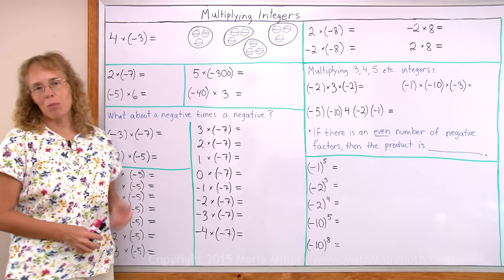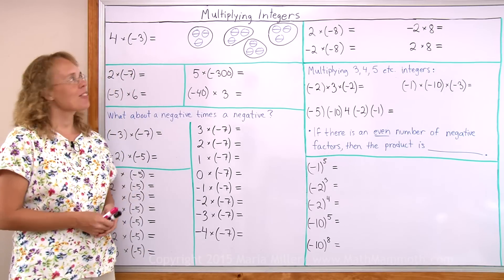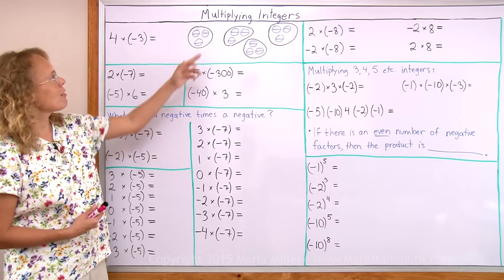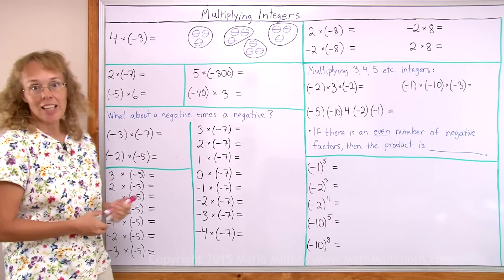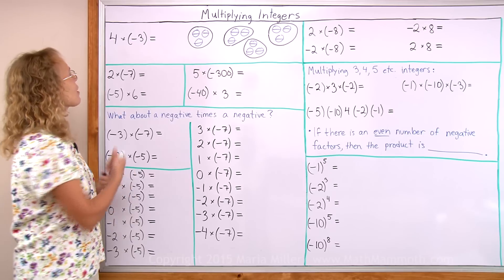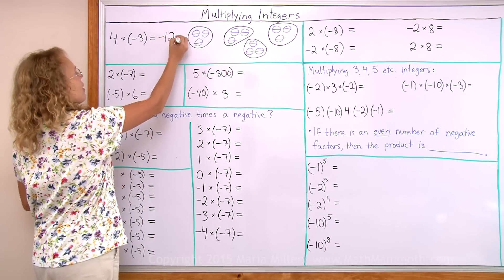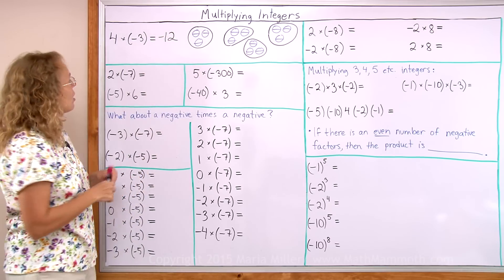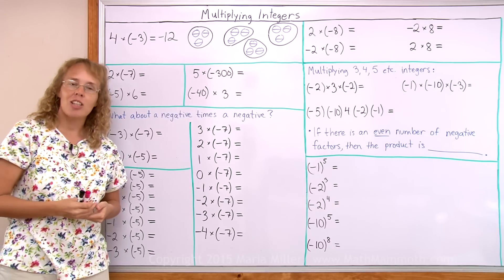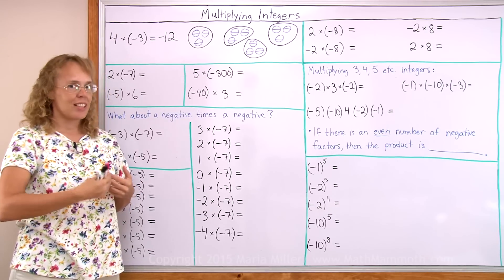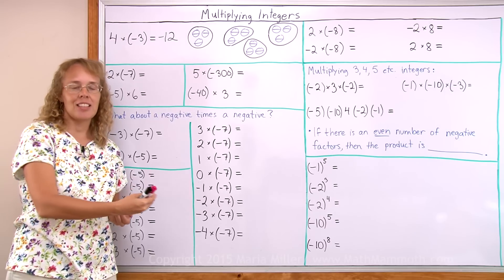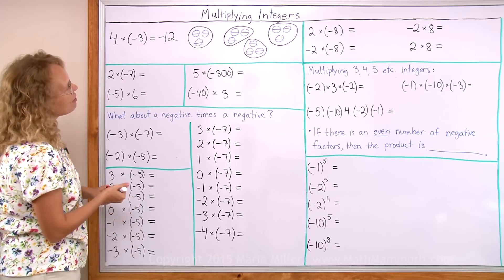My opening problem: 4 times negative 3. You can think of it as 4 groups of negative 3. The answer is obvious — it's going to be negative 12. And over here, 2 times negative 7. Again, you can think of 2 groups of negative 7, so you have negative 7 plus negative 7. It's going to be negative 14.